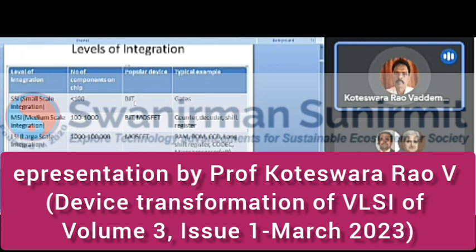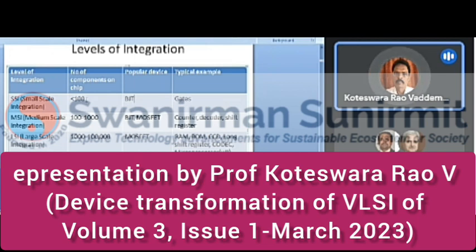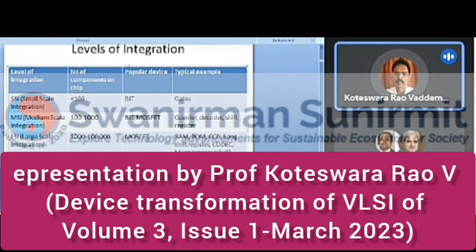In the early stages, bipolar junction transistors were used. However, BJTs suffer from disadvantages like high leakage current, high power dissipation, and high heat generation, which limits the number of devices on a single chip. That is why BJTs are used only for SSI and MSI. Later, MOSFETs replaced them because they have no leakage current issues, low power dissipation, and generate less heat, allowing any number of MOSFET devices to be accommodated on a chip.